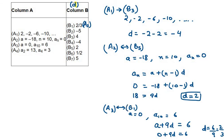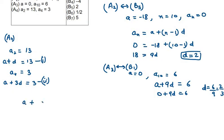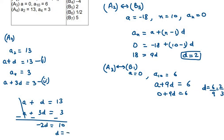Now the fourth part, A4: we are given a2 = 13 and a4 = 3. We can write a2 as a + d = 13 (equation 1) and a4 as a + 3d = 3 (equation 2). Using the elimination method, we cancel a, giving us -2d = 10, so d = -5. Therefore A4 matches with B2.